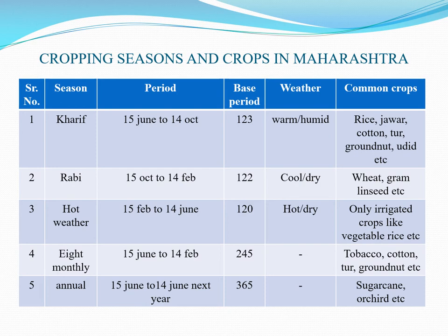The weather for Rabbi season is cool or dry, and common crops taken in Rabbi season are wheat, gram, linseed, etc. For the hot weather season, the period is from 15 February to 14 June, with a base period of 120 days. The climate becomes hot or dry, and common crops in hot weather include only irrigated crops like vegetables and rice.